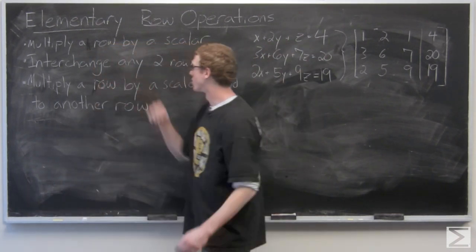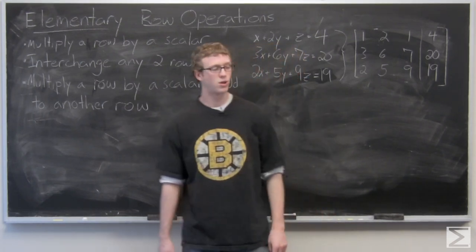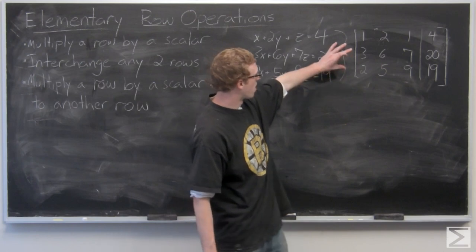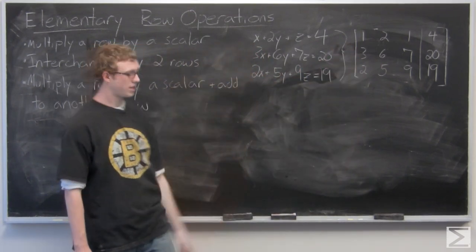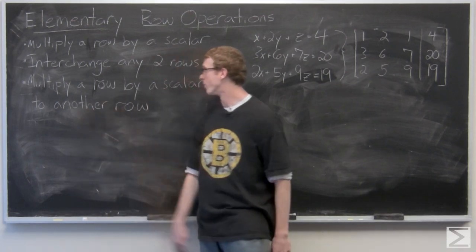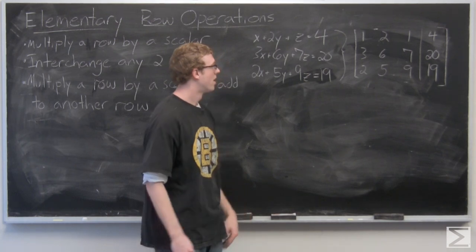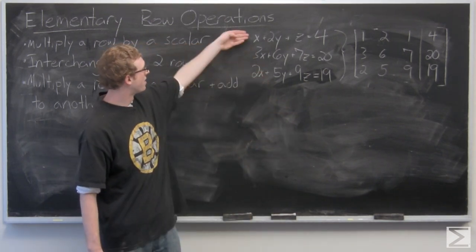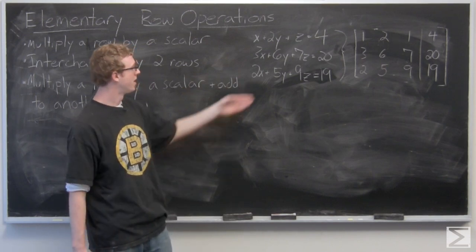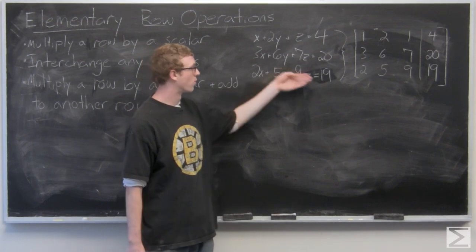We could also interchange any two rows of a matrix to make it easier to work with. That means we could swap these two rows, just like swapping these two equations here. And then we could multiply a row by a scalar and add it to another row. That would be like multiplying this top equation by negative two and adding it here to get rid of the x's and then solve for y and z.